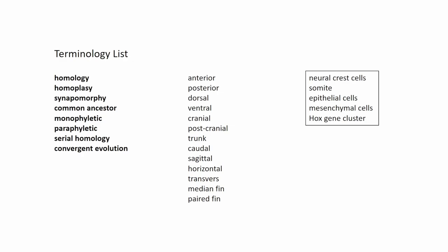Let's confirm which terminology is already explained. Homology and homoplasy are okay. Synapomorphic — I haven't mentioned anything about synapomorphic. The common ancestor is not a really difficult concept. Monophyletic, paraphyletic, and convergent evolution are okay. Serial homology I haven't explained yet.